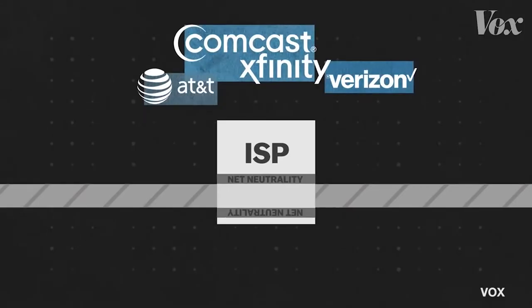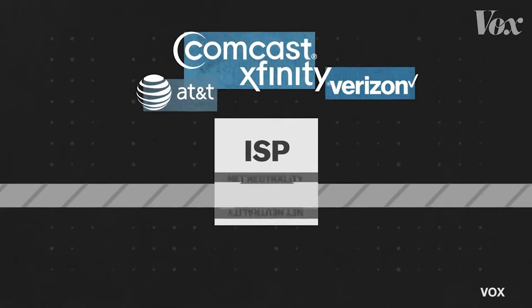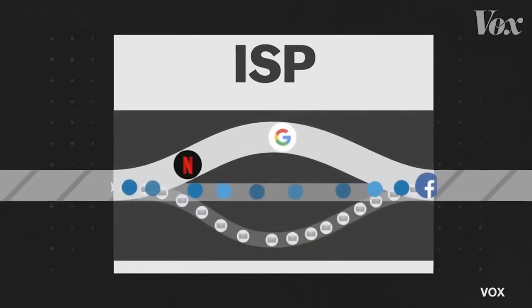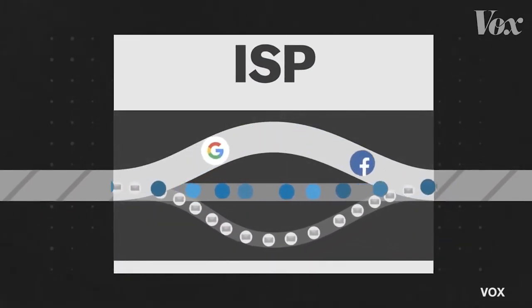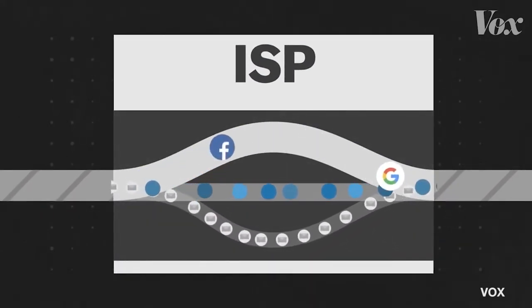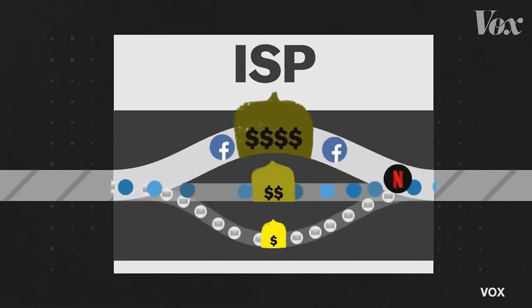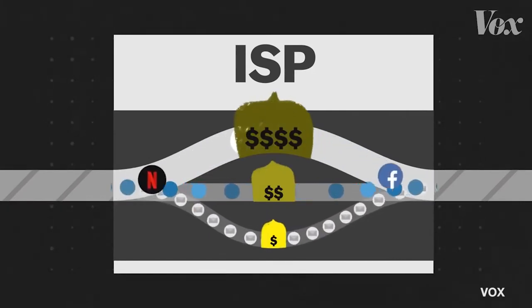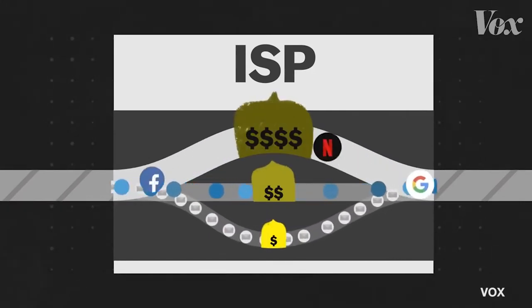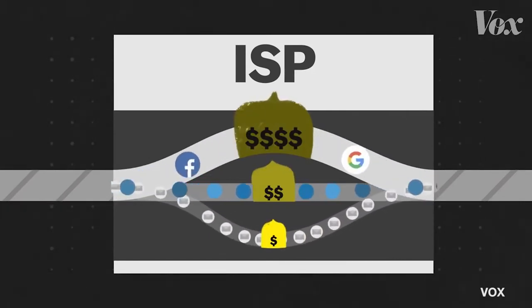With content throttling, Internet Service Providers, like Verizon or T-Mobile, will now be allowed to change the speed of data going from place to place, based on who sent it. This means the data received from, say, Twitter, might be intentionally slowed down, while Facebook pays to be made incredibly fast.